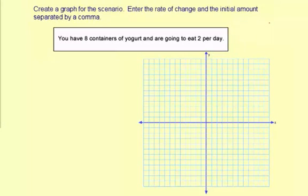Create a graph for this scenario. Enter the rate of change and the initial amount separated by a comma. It says you have eight containers of yogurt and are going to eat two per day.